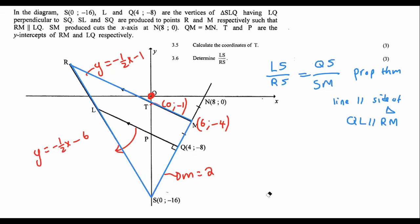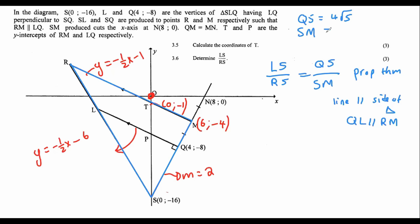We need to calculate the distance of QS and the distance of SM. Using the distance formula, QS should give you 4√5, and the distance of SM should give you 6√5. So LS/RS = 4√5 / 6√5, which gives a final answer of 2/3.